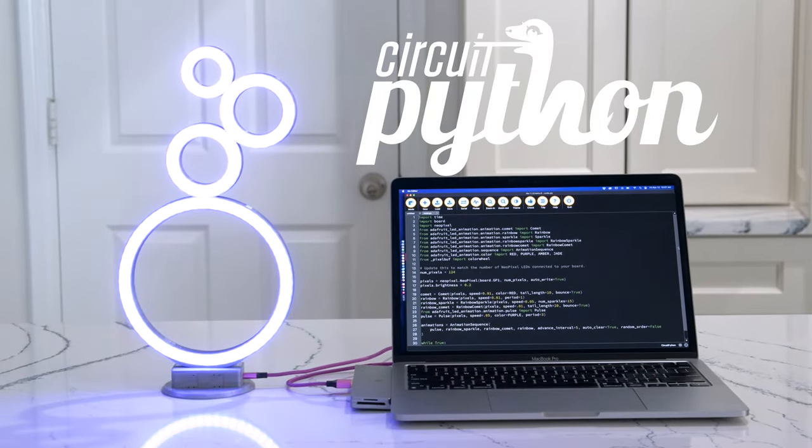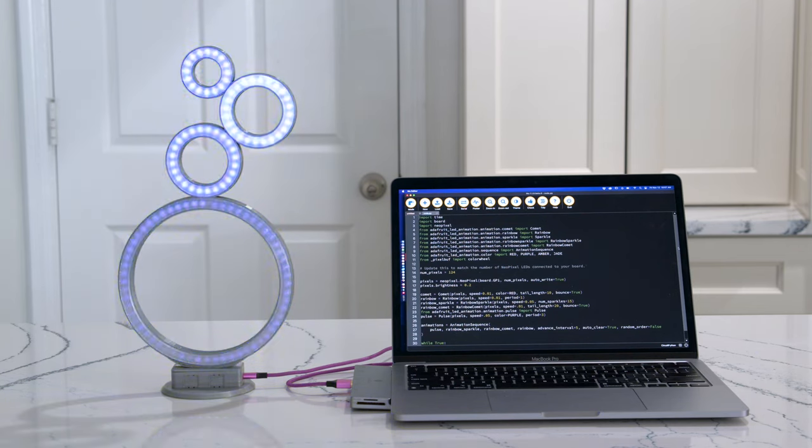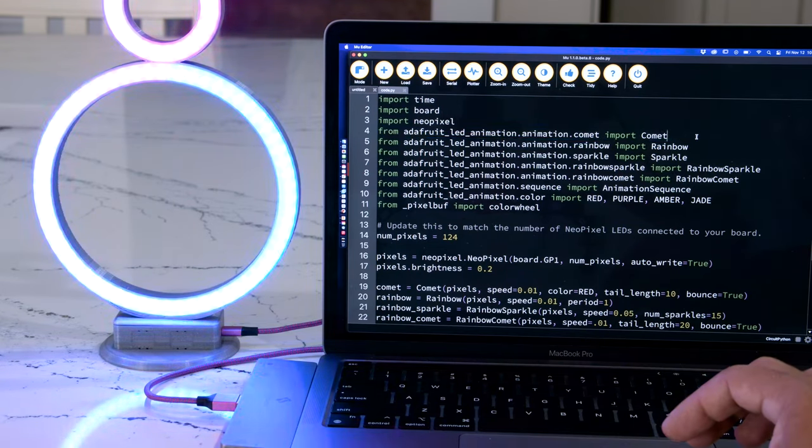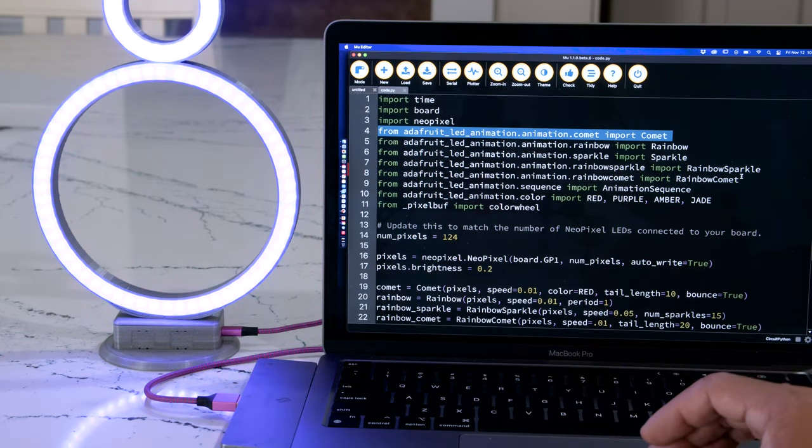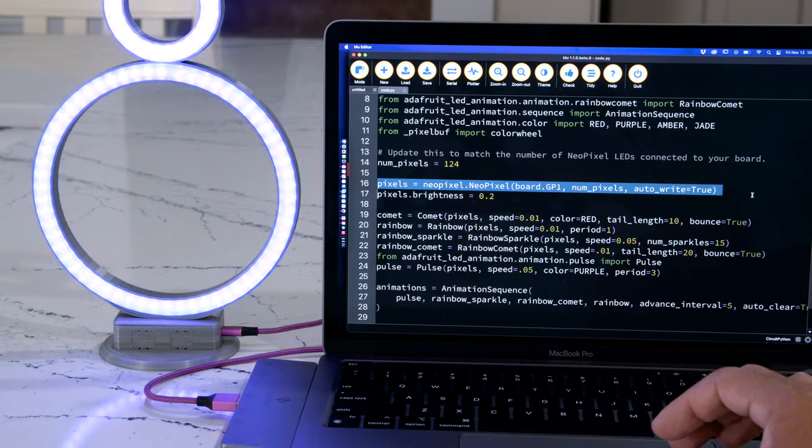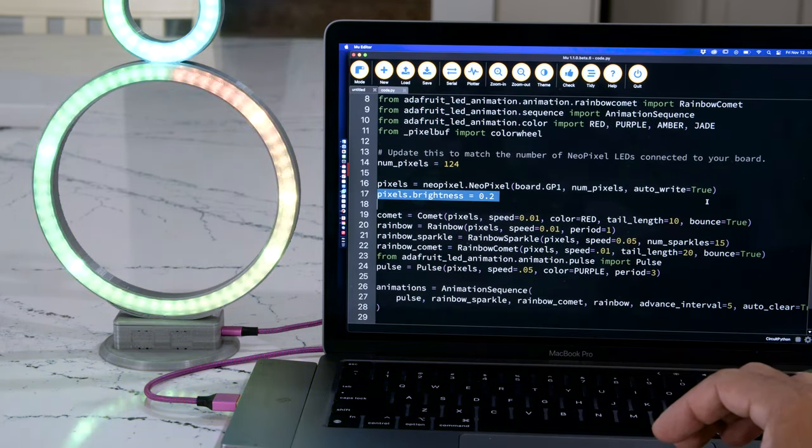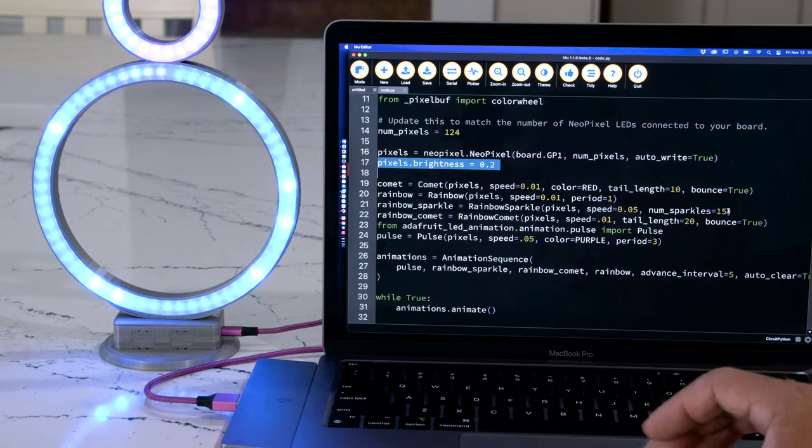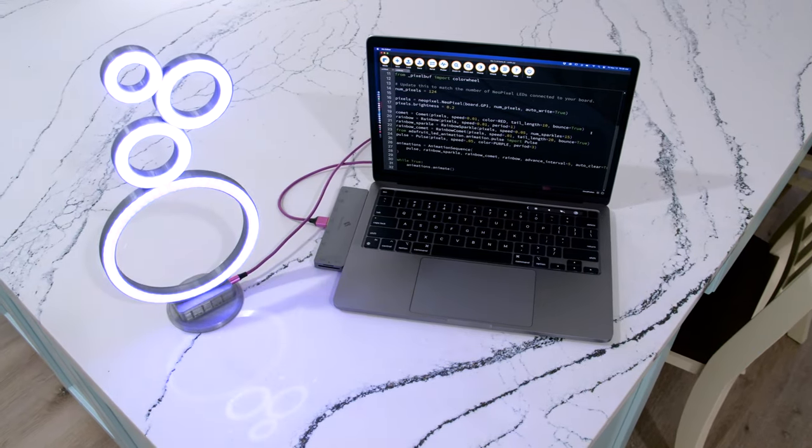We use the LED animation library for CircuitPython to create this animation sequence. It's easy to modify the parameters and customize the animations to fit the feel of your project. The animations are grouped together and depending on the type, they can have their own speed settings and different colors.